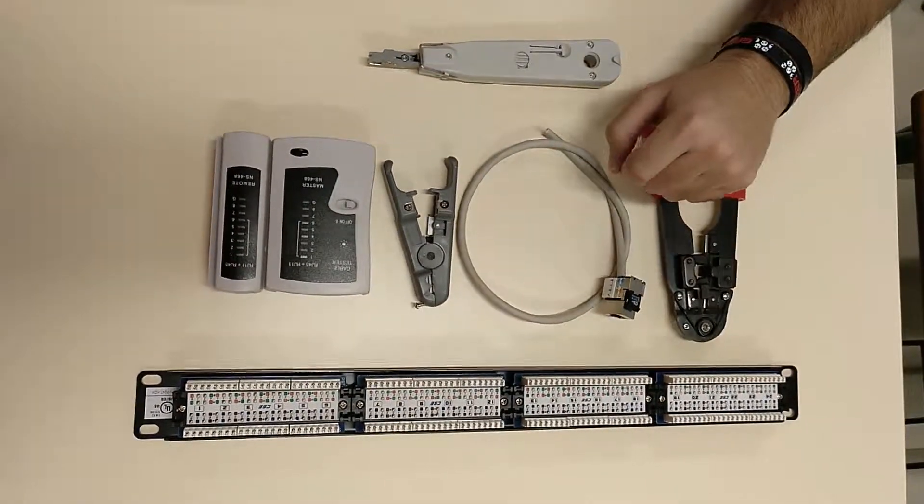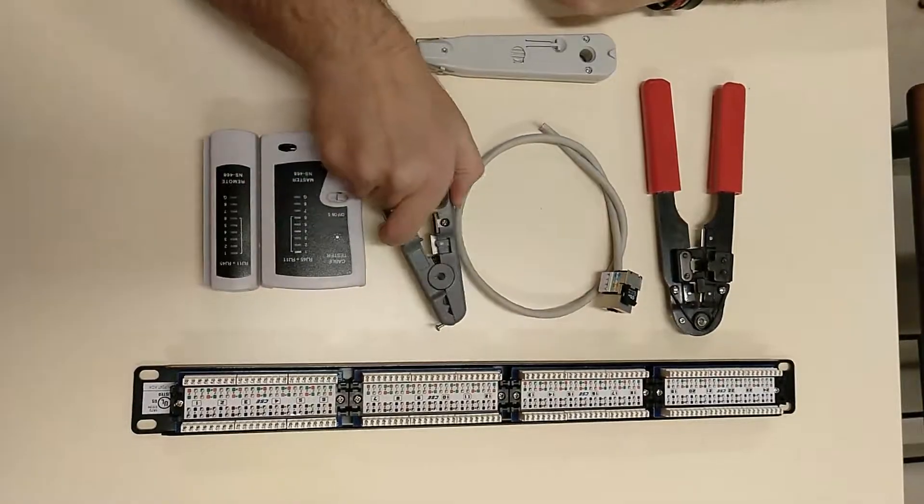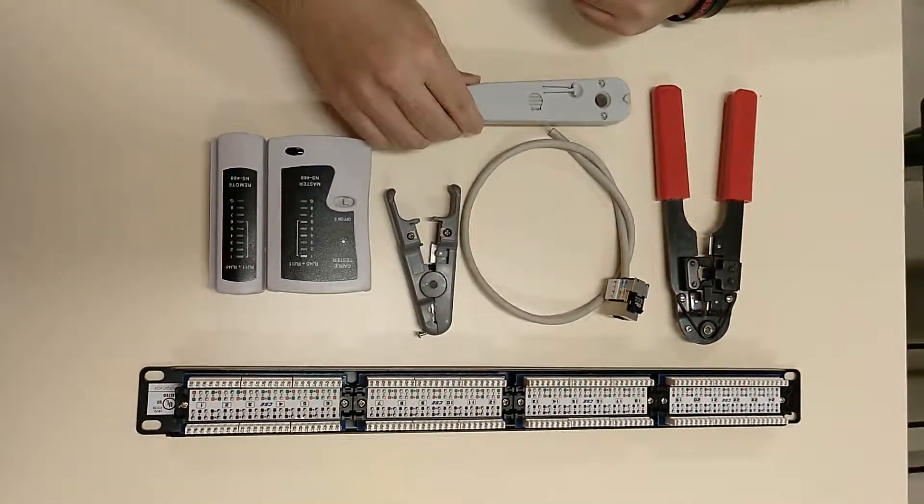A crimper, a network cable with a wall socket already installed, a cable, a punch down tool, a network tester and the patch panel.